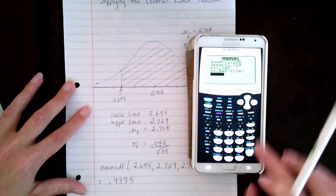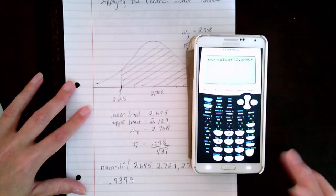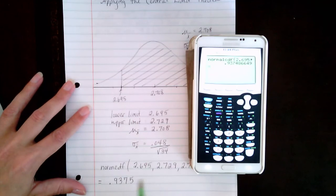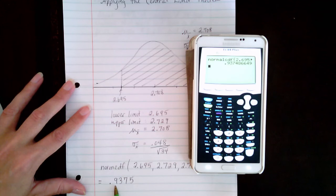And we go down and hit paste, hit enter. And when we round to four decimal places, we end up with 0.9375.